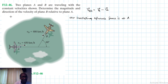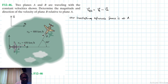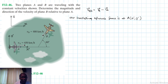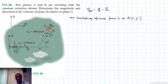Let me first draw our fixed reference frame with axes x and y. Then we have a translating reference frame with axes x-prime and y-prime. The translating reference frame x-prime and y-prime will be translating only — no change in direction.